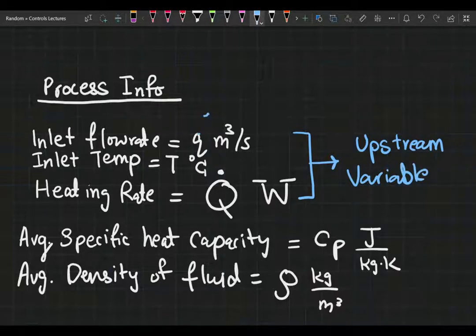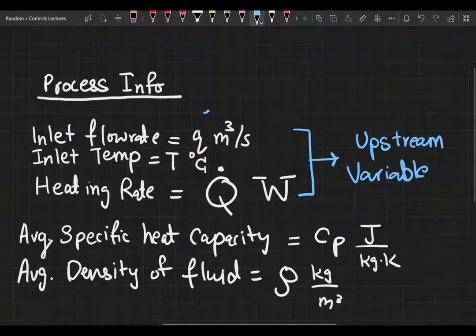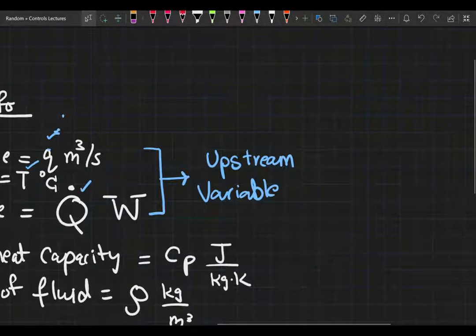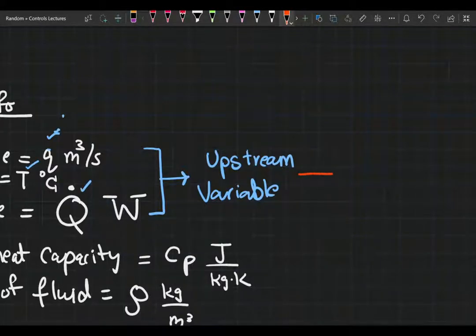In the first three rows, I have all the upstream variables that we know. We have the volumetric flow rate Q, we have the inlet temperature, and in an actual situation all of these upstream variables can be measured via both analog and digital sensors.